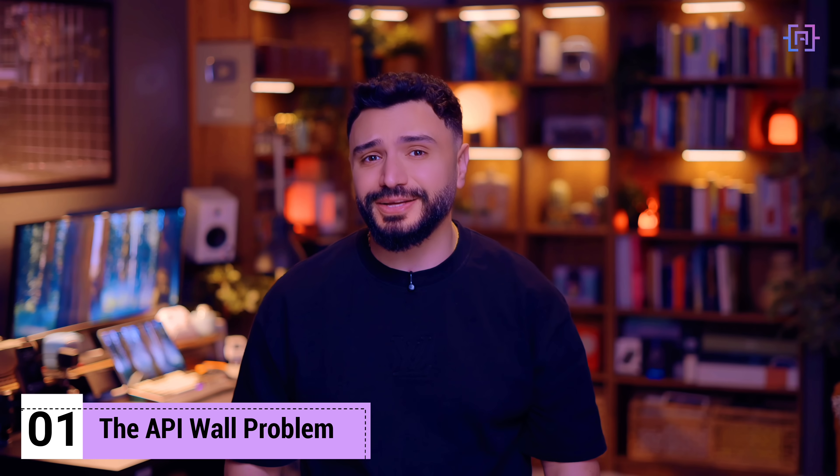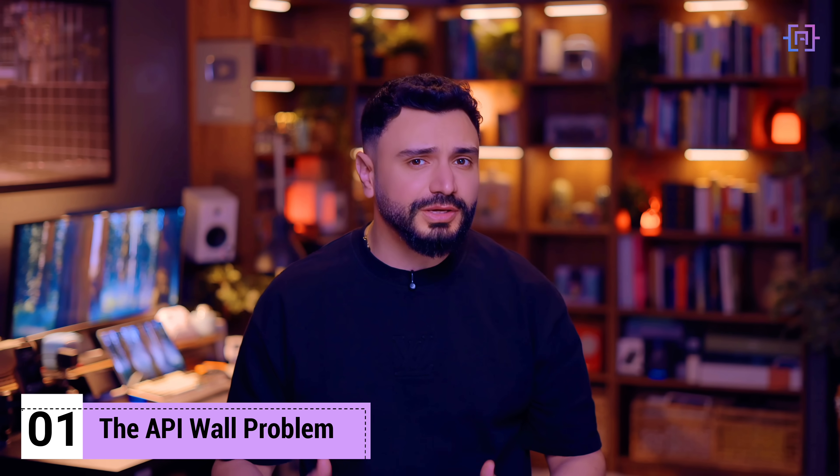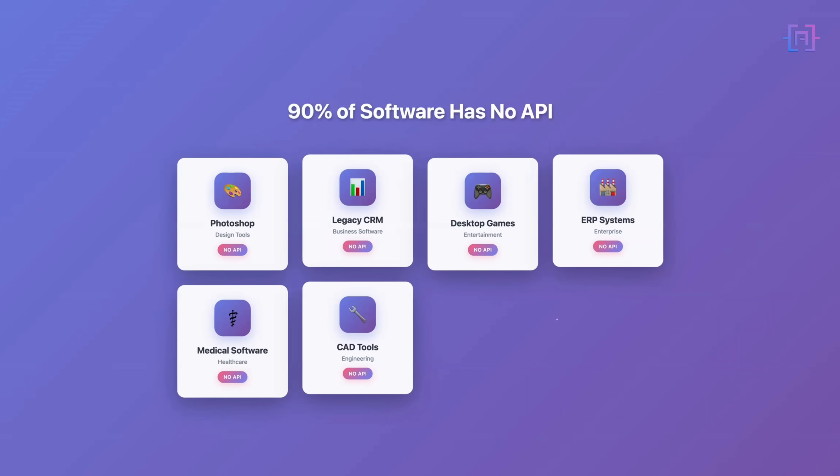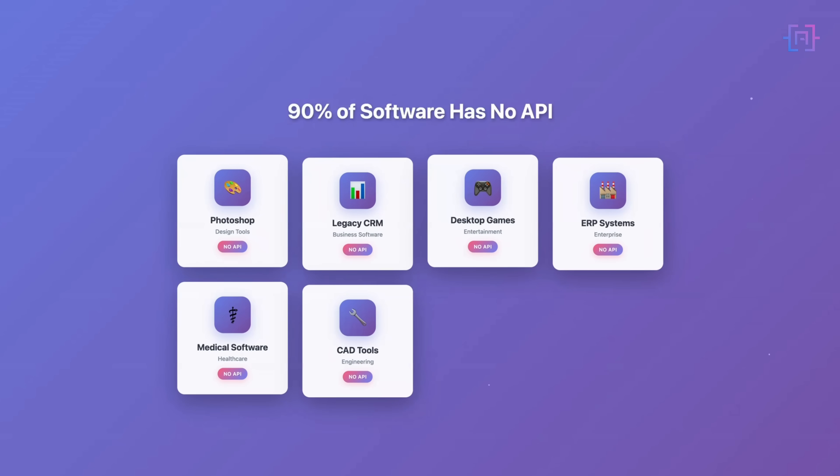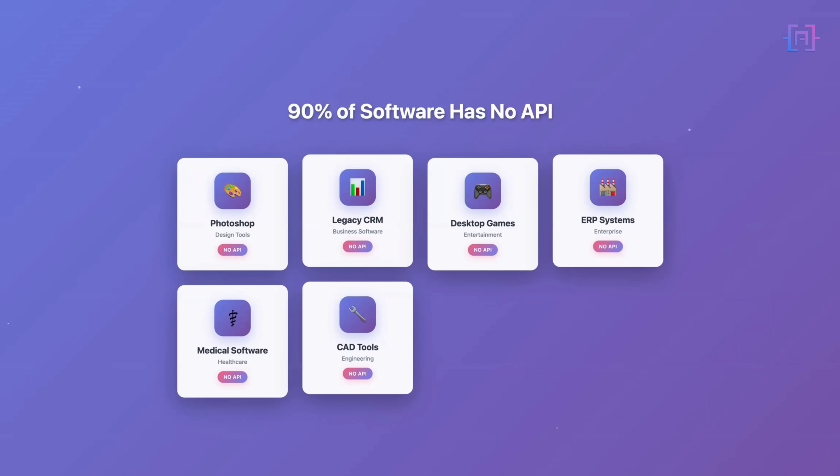APIs are great — we covered that in Pillar 1 with MCP. But here's the problem: 90% of the software you use daily doesn't have an API. Your design tools, your legacy enterprise software, and even some modern apps — they are like black boxes to traditional AI agents. This tutorial is for developers who have hit the API wall.